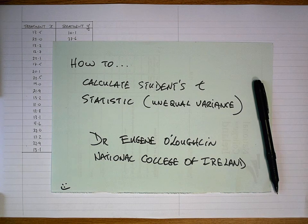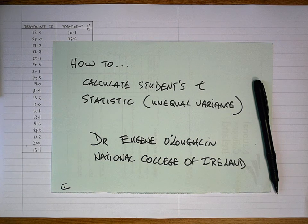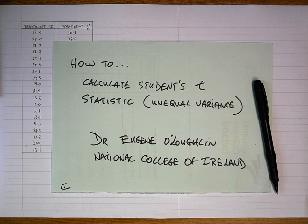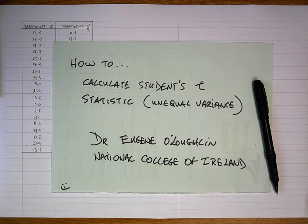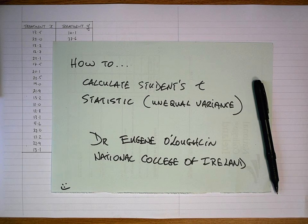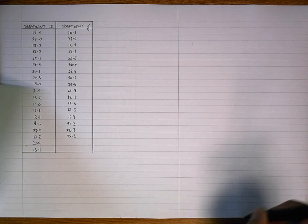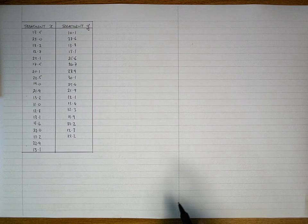Hi everybody, this is Eugene O'Loughlin, Lecturer on Computing at the National College of Ireland, and welcome to my series of short how-to videos. In this video, we're going to learn how to calculate Student's t-statistics when we have unequal variance on unpaired or independent data, and we're going to learn how to do this by hand. So before we start, let's take a look at some sample data.